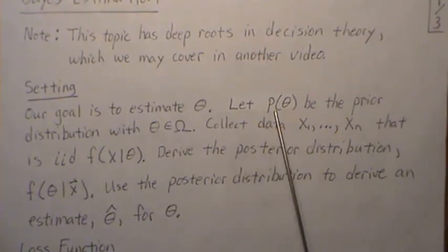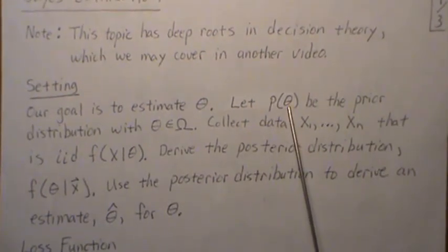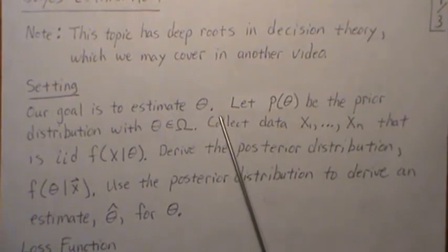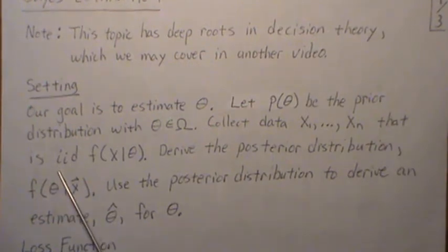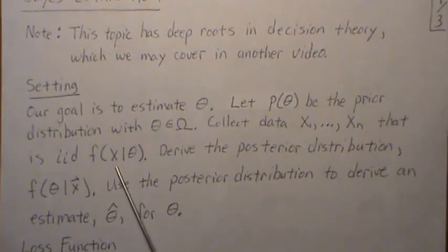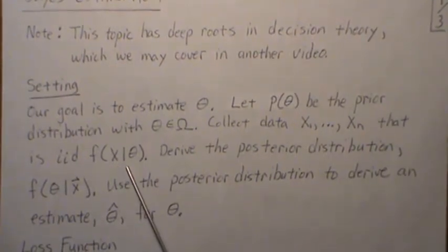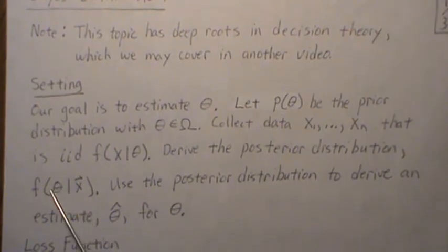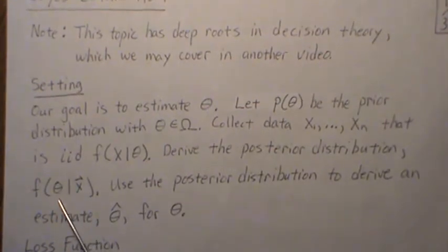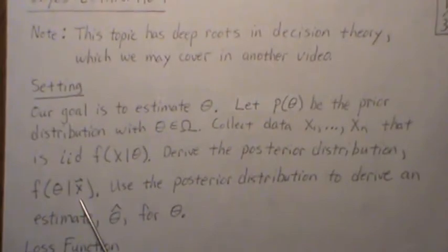The prior represents our beliefs about theta before we collect data. Now we collect data — a sample of size n that is independent and identically distributed with distribution f of x given theta. Once we collect data, we derive the posterior distribution f of theta given x, which is our updated belief about theta after collecting the data.